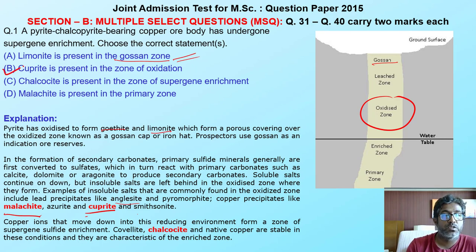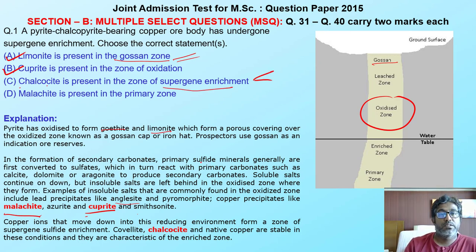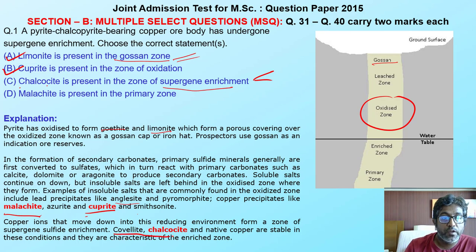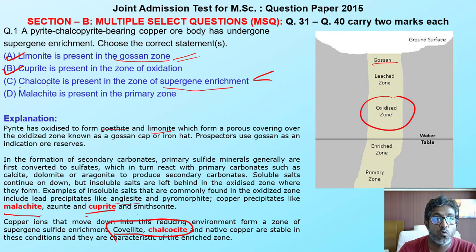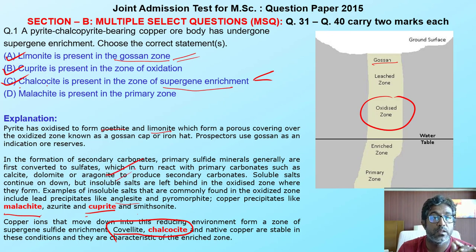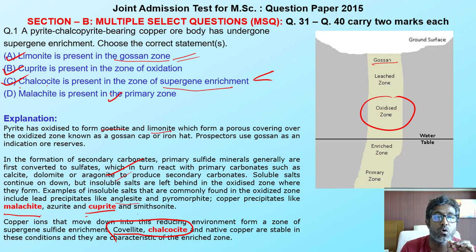In the zone of supergene enrichment, copper is present in terms of chalcocite and covellite. If someone asks what copper mineral to identify in the supergene enrichment zone, the first one is chalcocite and the second is covellite. Malachite is present in the oxidized zone, not the primary zone — that option is the wrong one.